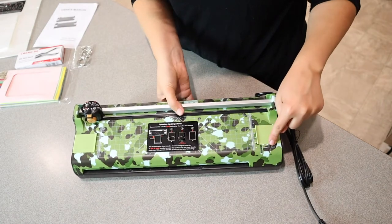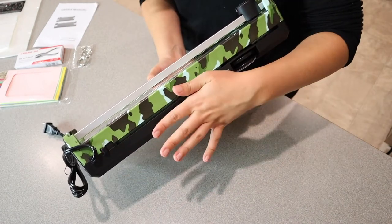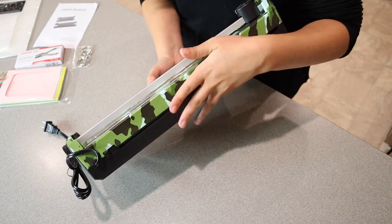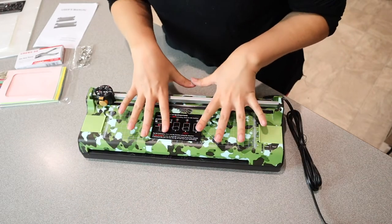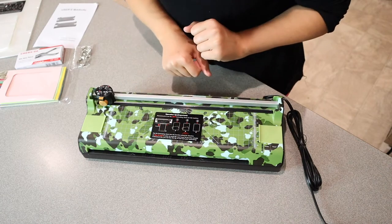We have the little ready and the power lights right here. We have this little switch back here so that you can reverse it in case something were to get stuck in here. Now that we know all of this comes with and what it looks like, I'm going to go ahead and get something to laminate and we'll test it out.